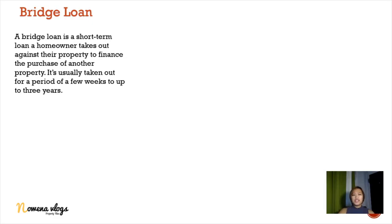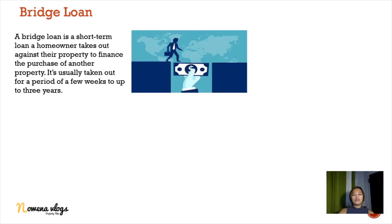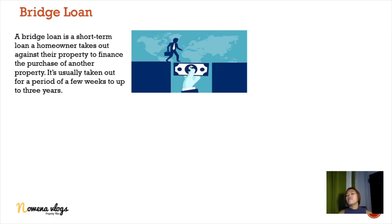Bridge loan is a short-term loan a homeowner takes out against their property to finance the purchase of another property. It is usually taken for a period of a few weeks to up to three years. In simple terms, you use your existing property as collateral to finance the purchase of a new property.